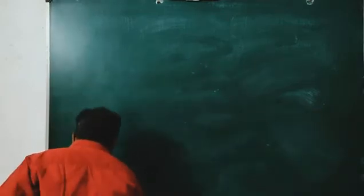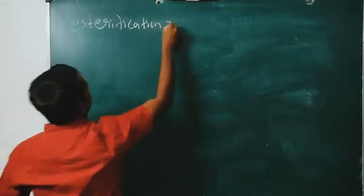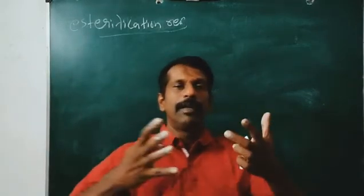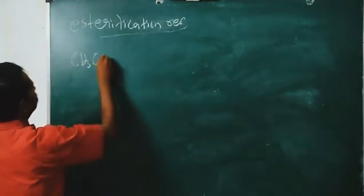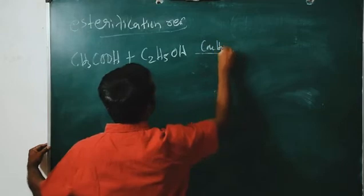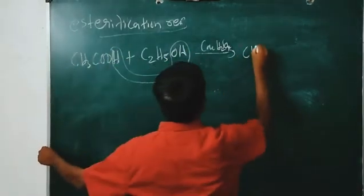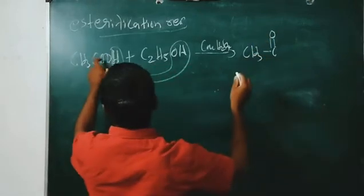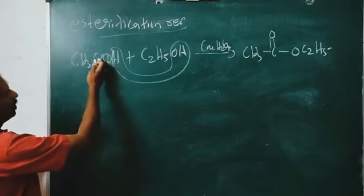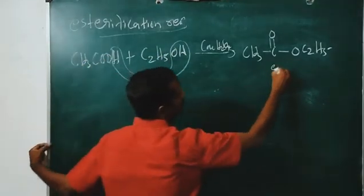Another reaction: esterification reaction. What is an esterification reaction? A carboxylic acid reacts with an alcohol in the presence of concentrated H2SO4 to give an ester. For example, CH3COOH (acetic acid) reacts with C2H5OH (ethanol) in the presence of concentrated H2SO4 to undergo esterification — H and OH are eliminated — and we get the ester CH3COOC2H5.